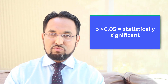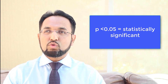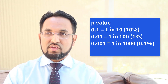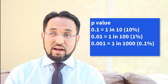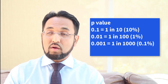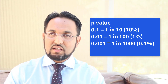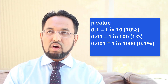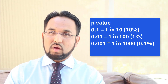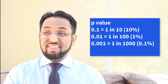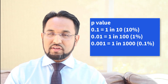Just to recap: a p-value of 0.1 means there's a 10% probability that it's random; a p-value of 0.01 means 1%; and 0.001 means 0.1%, i.e., a 1 in 1,000 probability that it's random.